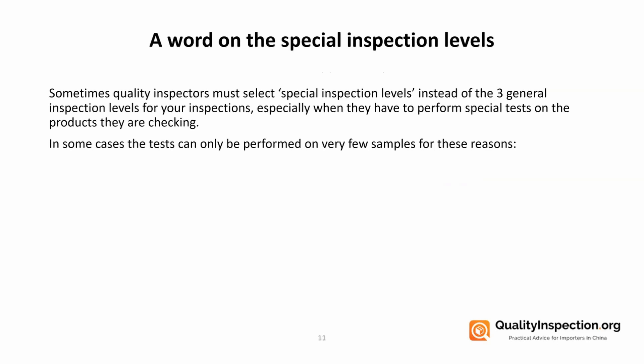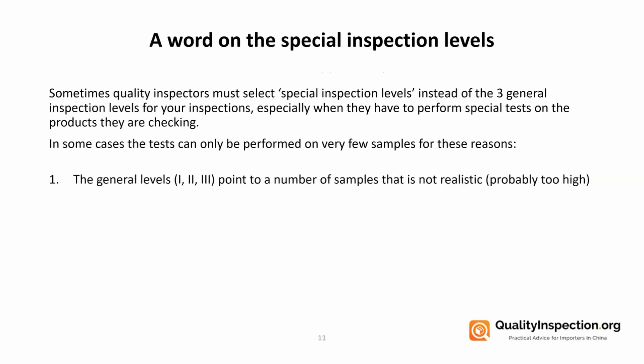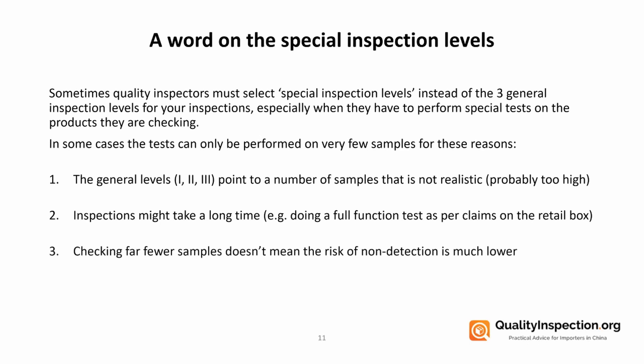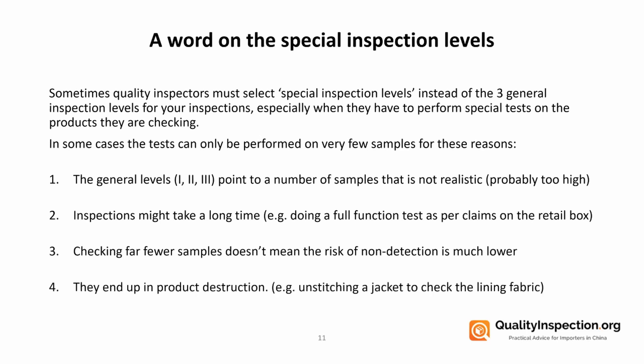You'll have noticed on the AQL tables that there are special inspection levels too. What are these? Usually these are used when inspectors need to perform special tests on the products they're checking. In some cases, these tests can only — or only need to be — performed on very few samples for the following reasons: first, if the general levels are suggesting a number of samples that's actually not realistic; second, if the inspections using the general levels are going to take too long; third, when checking far fewer samples doesn't actually mean the risk of non-detection is much lower; and fourth, when the tests performed end up in product destruction, which we want to avoid happening to too many of our products.